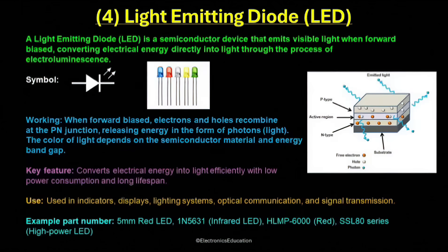A light-emitting diode, or LED, is a semiconductor device that emits visible light when forward biased, converting electrical energy directly into light through the process of electroluminescence. When voltage is applied in the forward direction, electrons from the N-type region and holes from the P-type region move toward the junction and recombine in the active region, releasing energy in the form of photons, which is observed as light.